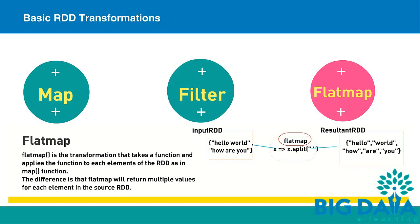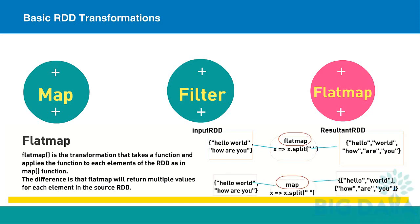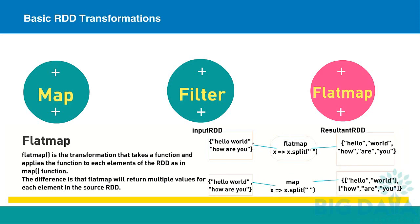To recollect, if we apply the split function to map transformation instead of flat map transformation, then we will get the values as highlighted. The words will be split into multiple words; however, the words belonging to an element of the source RDD are still a single element in the resultant RDD.